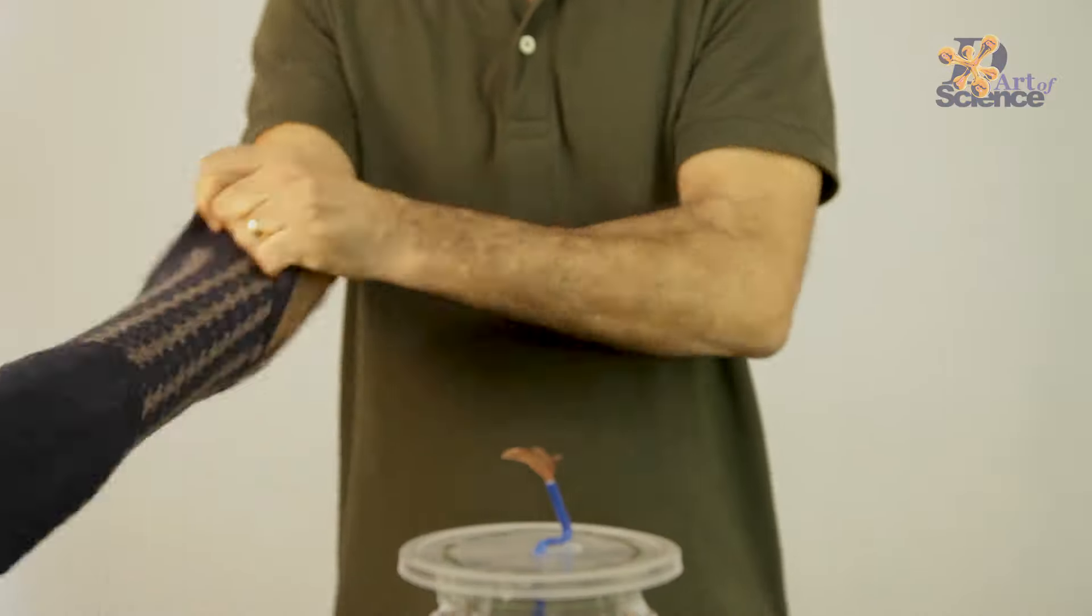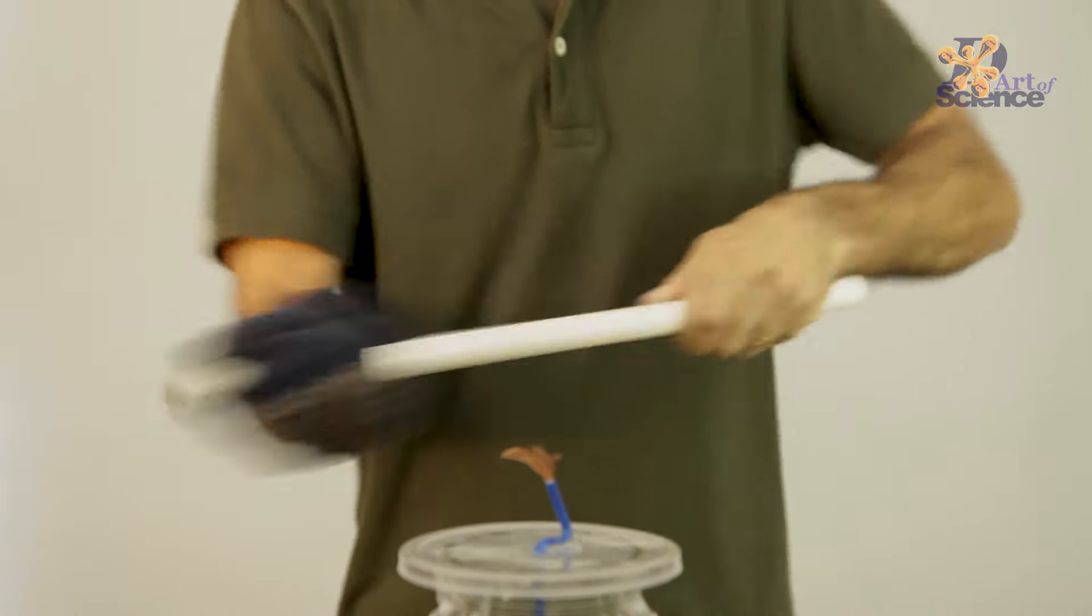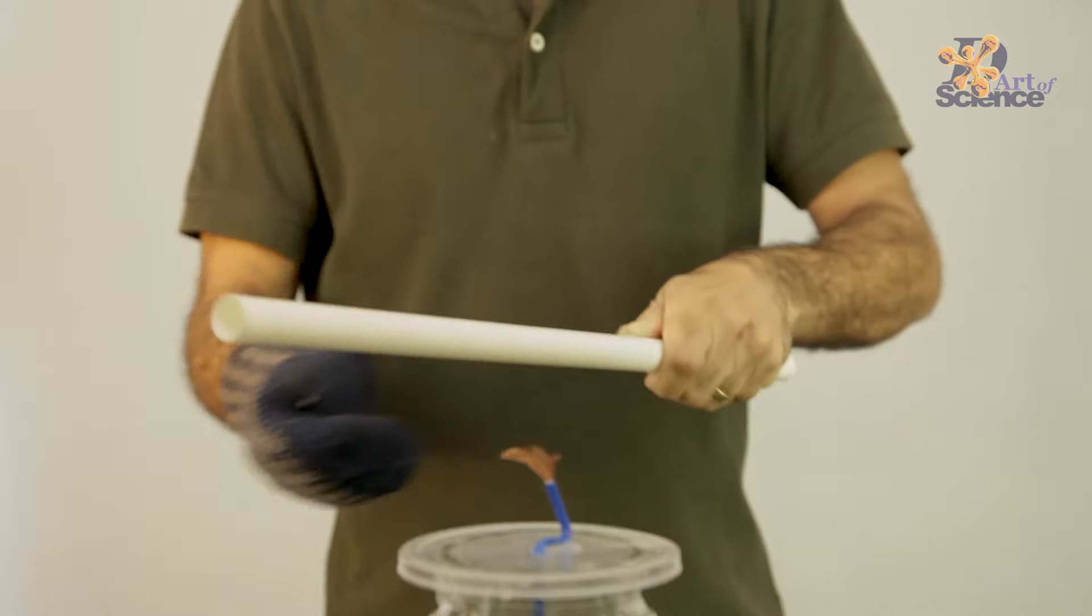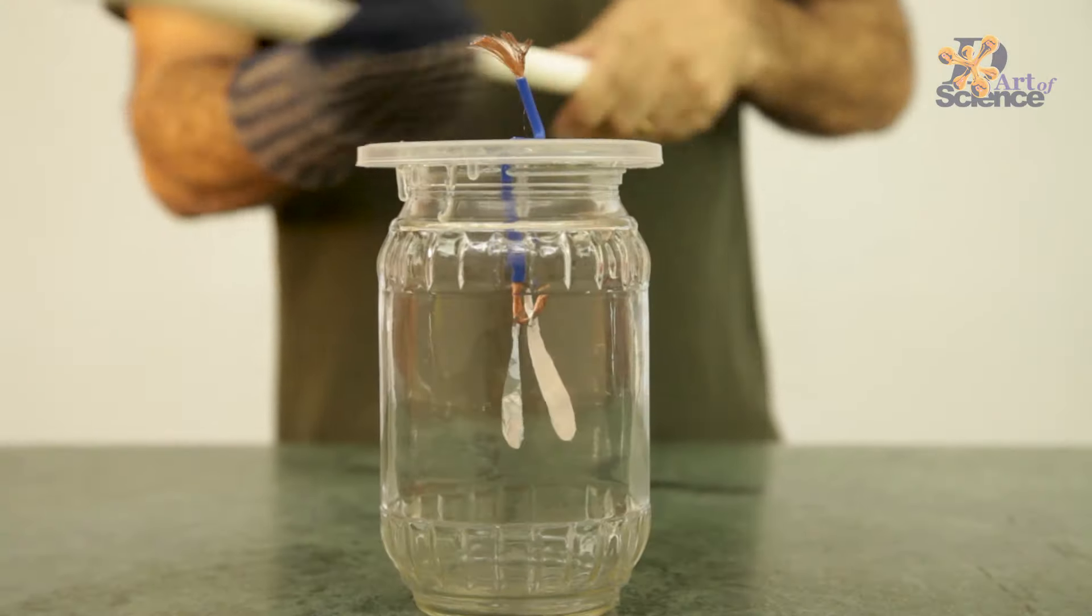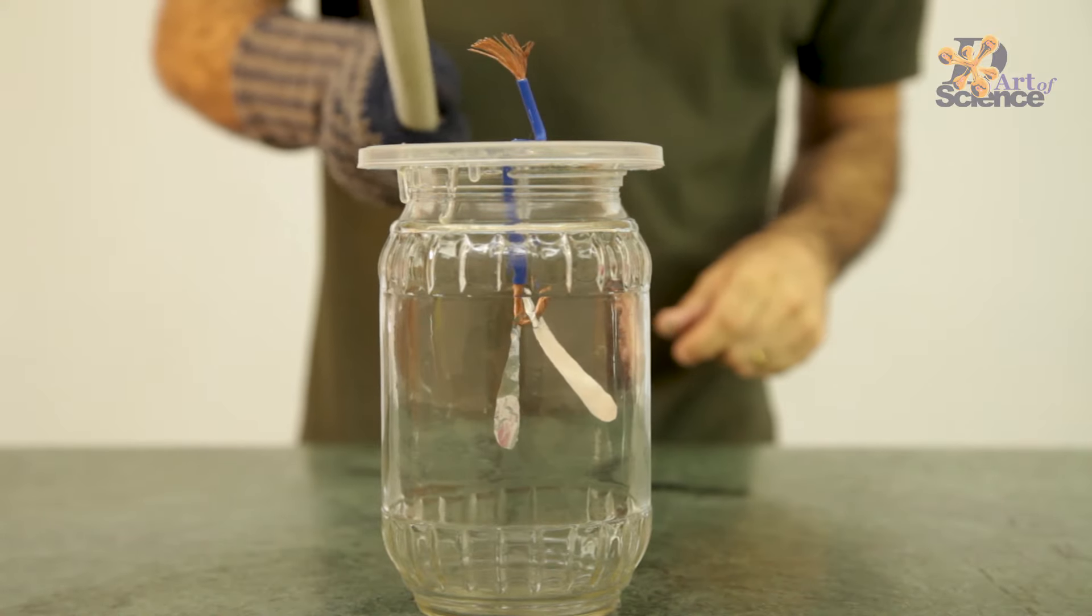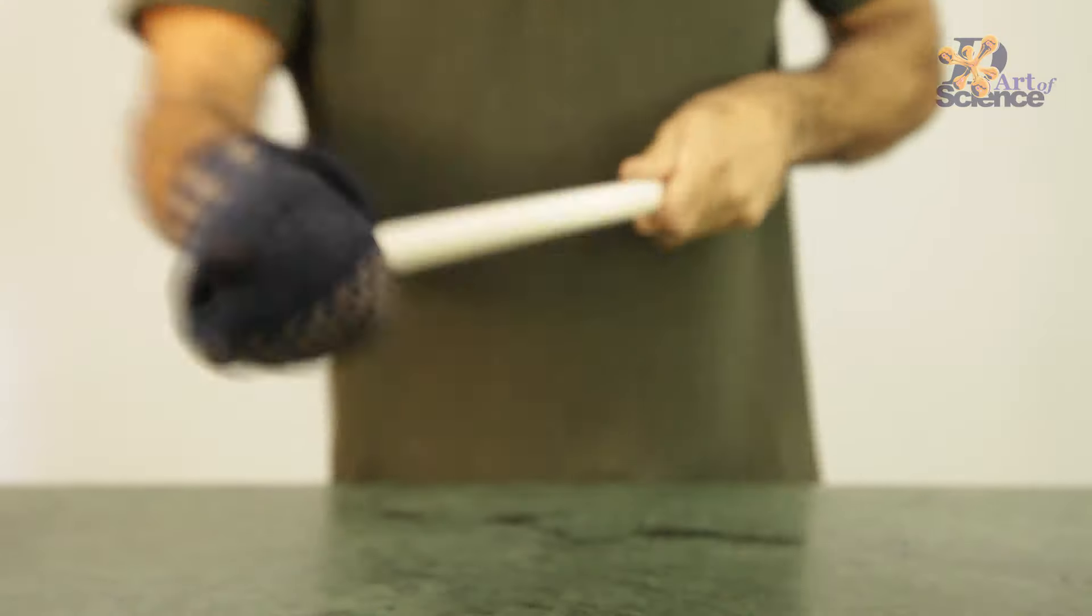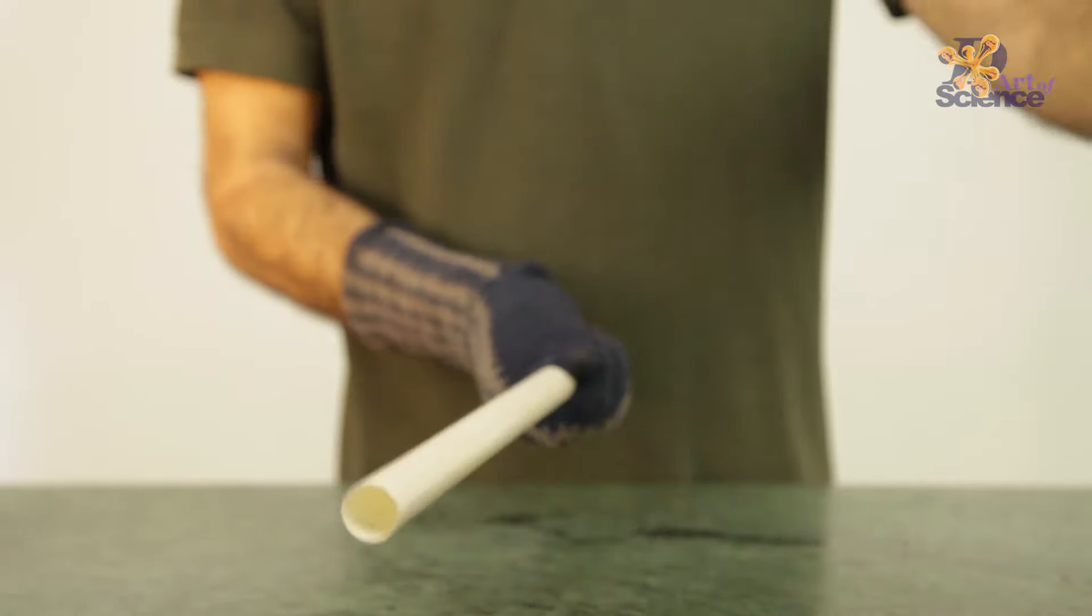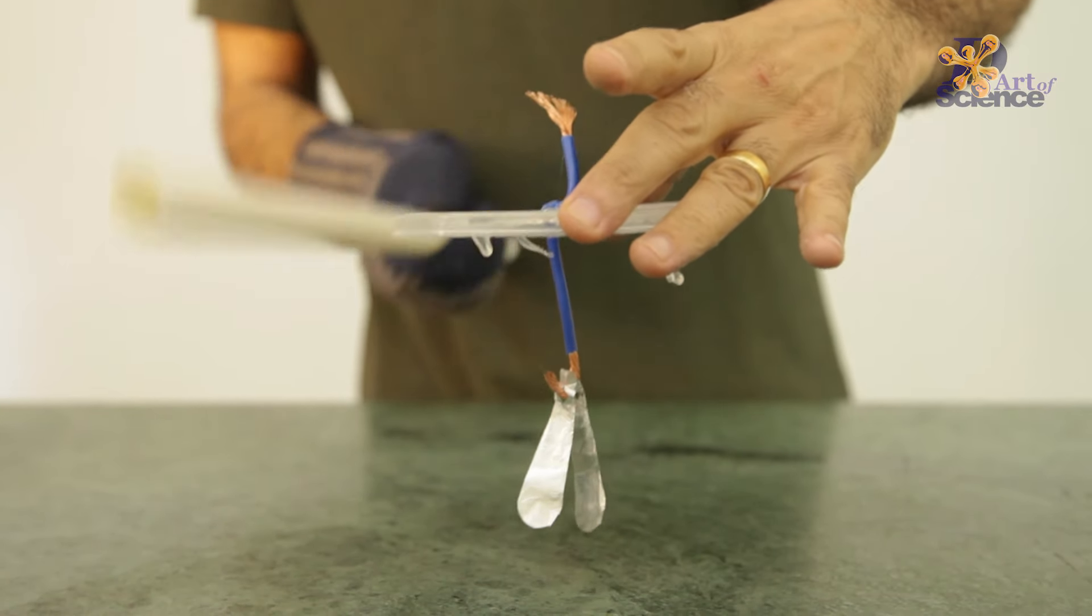Try and charge different materials and see which ones work best. If you remove the jar in this setup then the experiment doesn't work even though the foil shows some attraction to the charged PVC pipe.